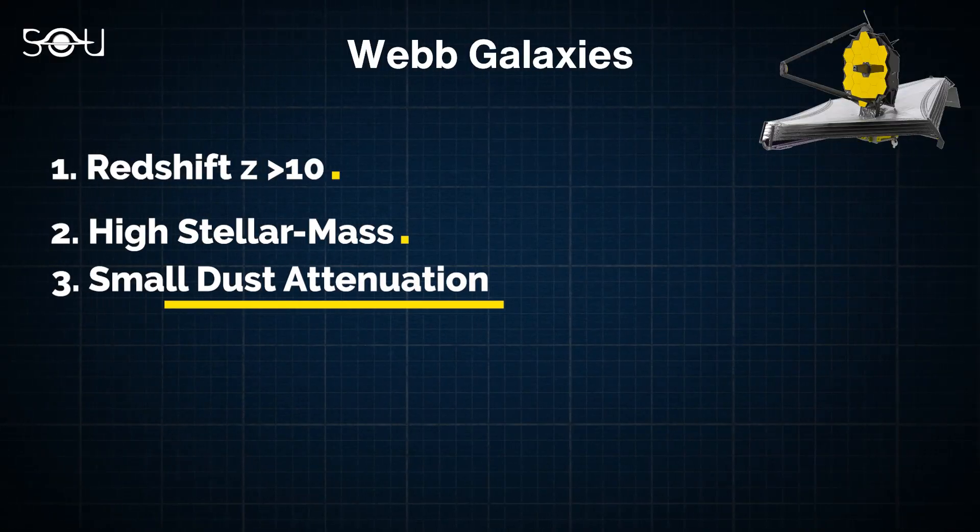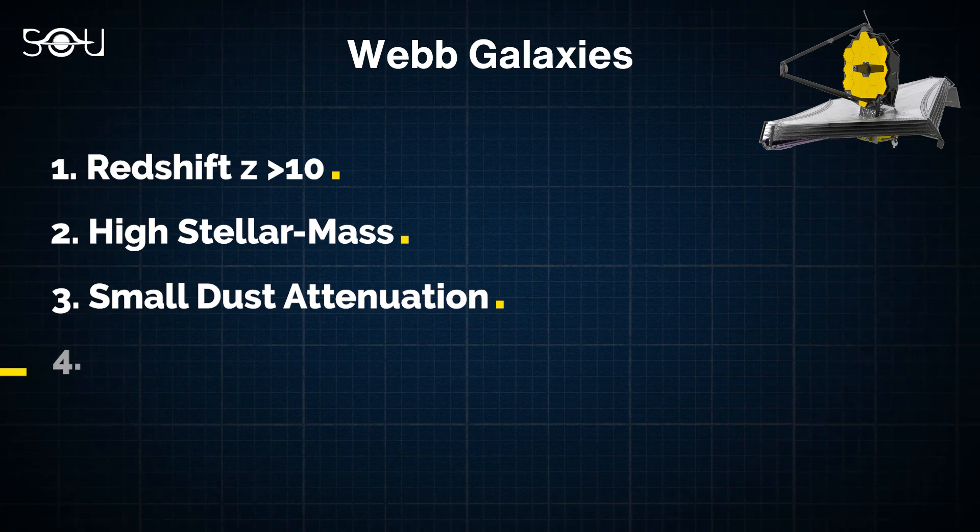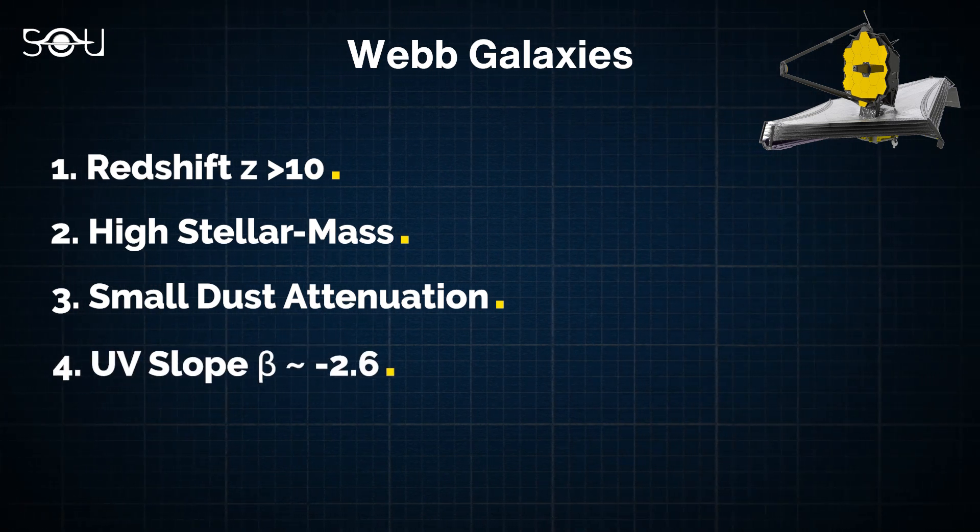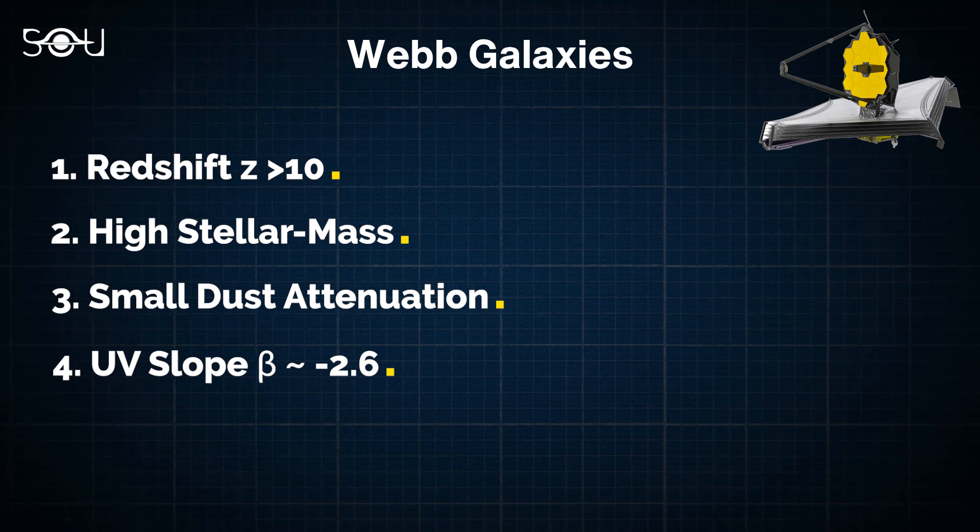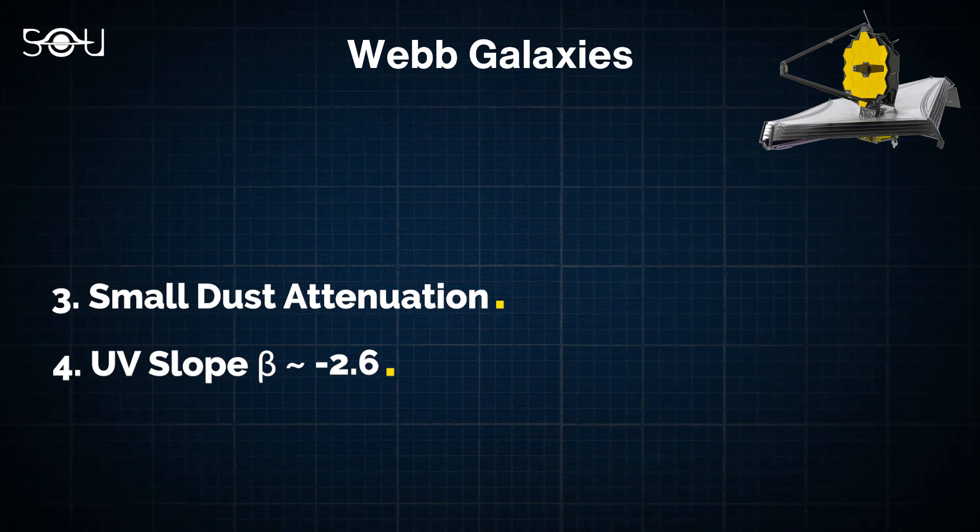The third point is that they have a very small dust attenuation. And finally, their UV continuum slope is about negative 2.6. These last two terms might be new to you, so let me explain them in a simple way.